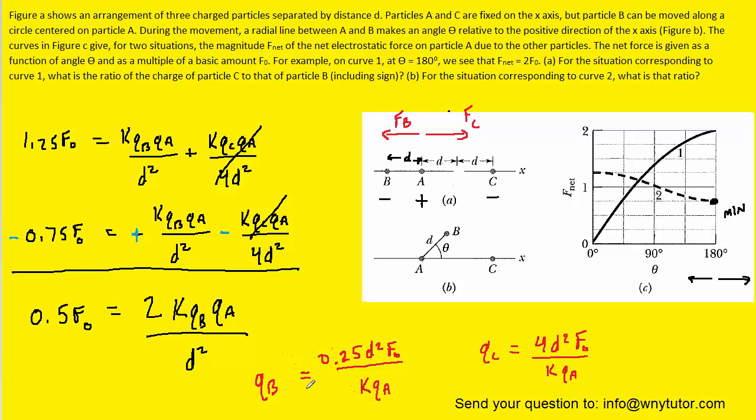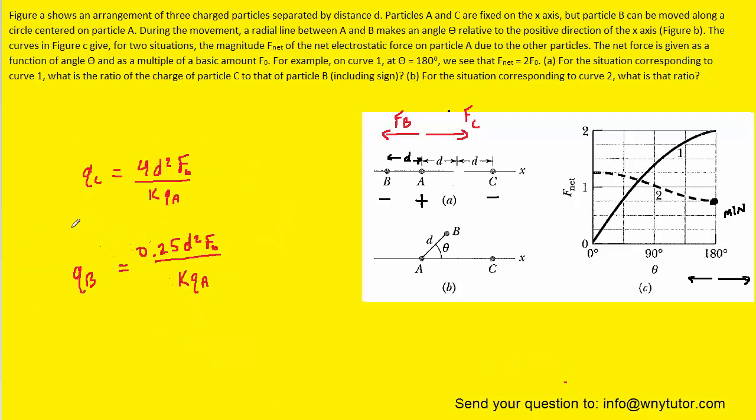So now that we have an expression for both QB and QC, we're simply going to divide them to get the ratio. We're basically stacking the equations on top of each other. We divide QC by QB to get the ratio we're looking for. Dividing the right side is a little more complicated, but the D squareds will cancel out, as will the F0s. The KQAs will also cancel, and you're left with 4 divided by 0.25, which of course is 16.